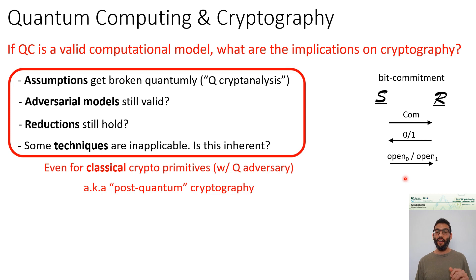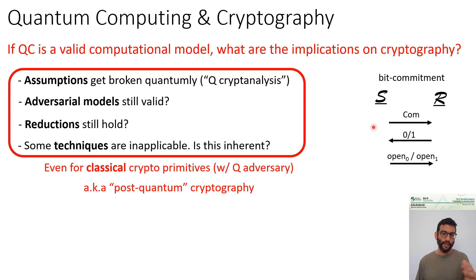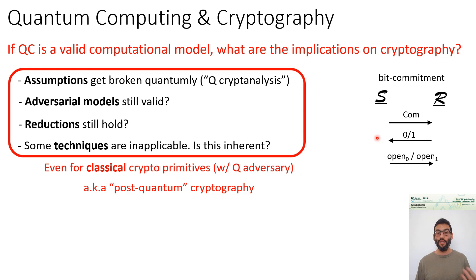However, if we are thinking about a quantum sender, this is no longer the case. We cannot necessarily record a quantum state. Performing a quantum measurement actually destroys the quantum state, so after running the experiment with challenge 0, we can no longer go back and run it again with challenge 1 because the state of the sender is destroyed.